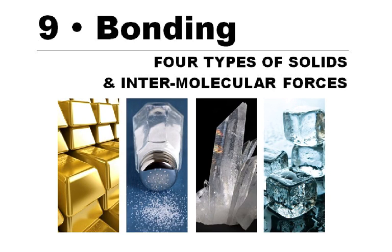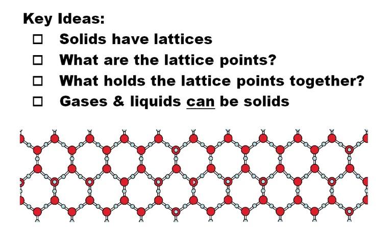I want to do a quick review of the four types of solids and the different kinds of intermolecular forces. Now it turns out even though there are four types of solids, we end up with six different categories because there are three categories of molecular solids.